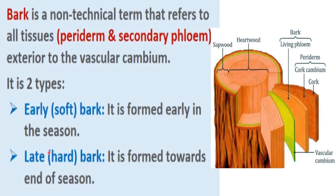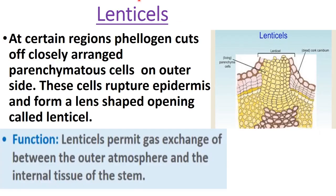In the diagram, the cork layer (phellem) and the complete periderm — with three layers of phellogen, phelloderm, and phellem — is visible, along with living phloem. The vascular cambium is present here, and all layers outside the vascular cambium — periderm and secondary phloem — form the bark.